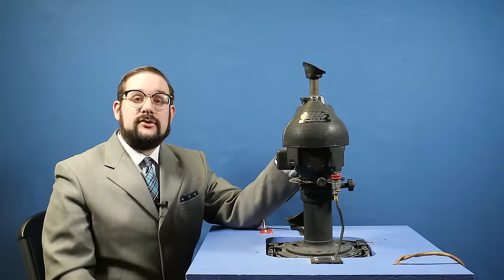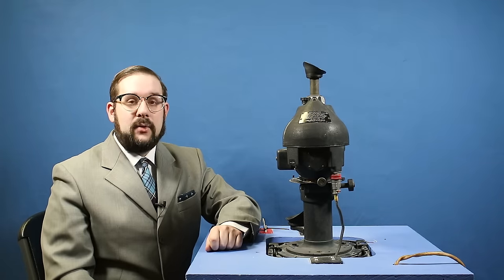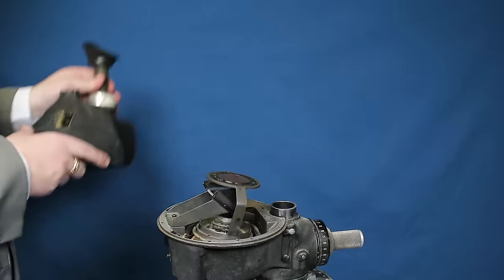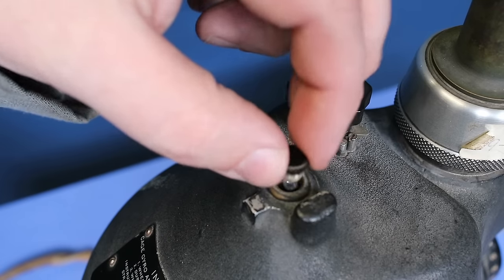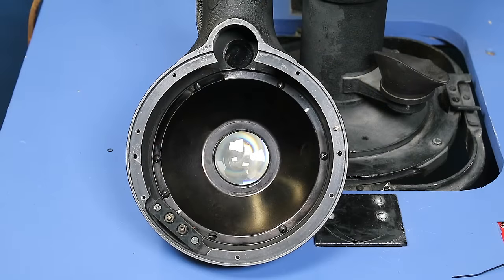And that is how you use the B-3 drift sight. So let's actually take this apart and see how it works. If we remove the top dome here we'll find the first part of the system which is a 3 volt incandescent lamp and a set of condenser or collimator lenses.